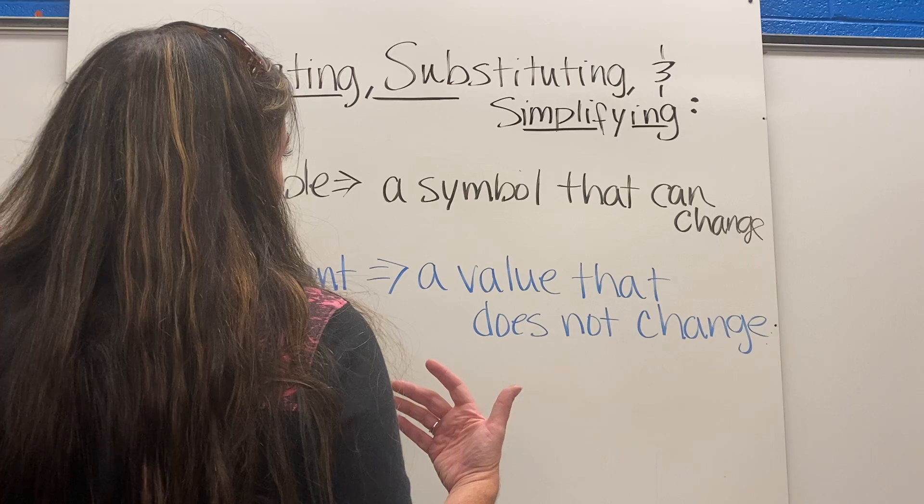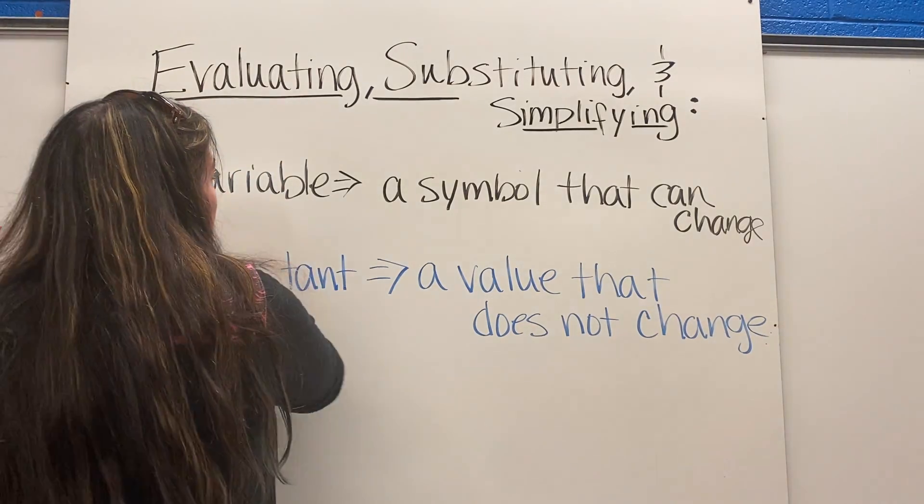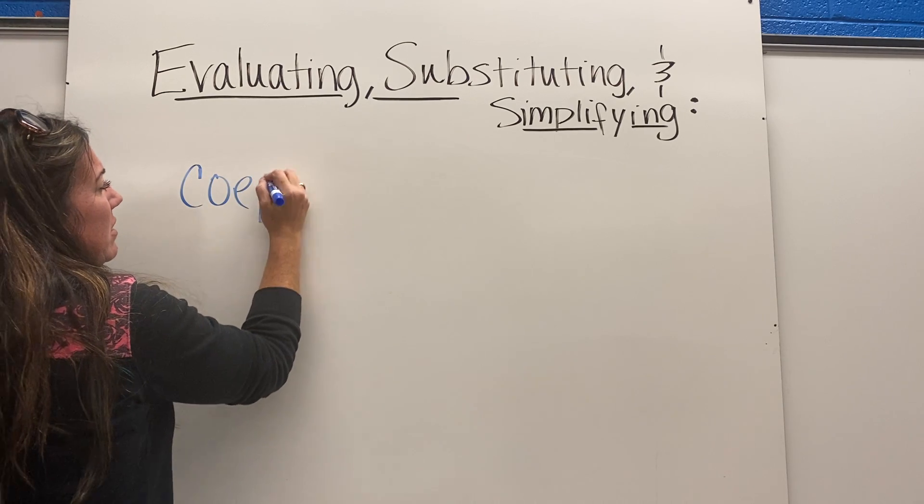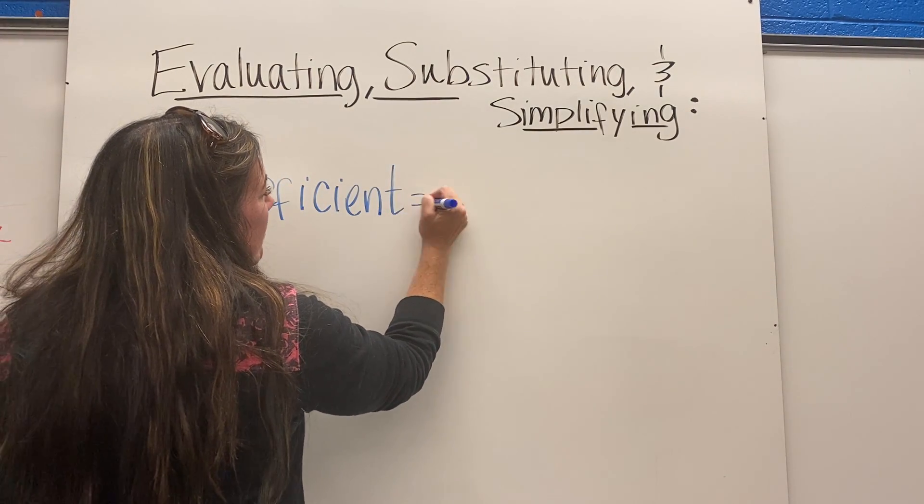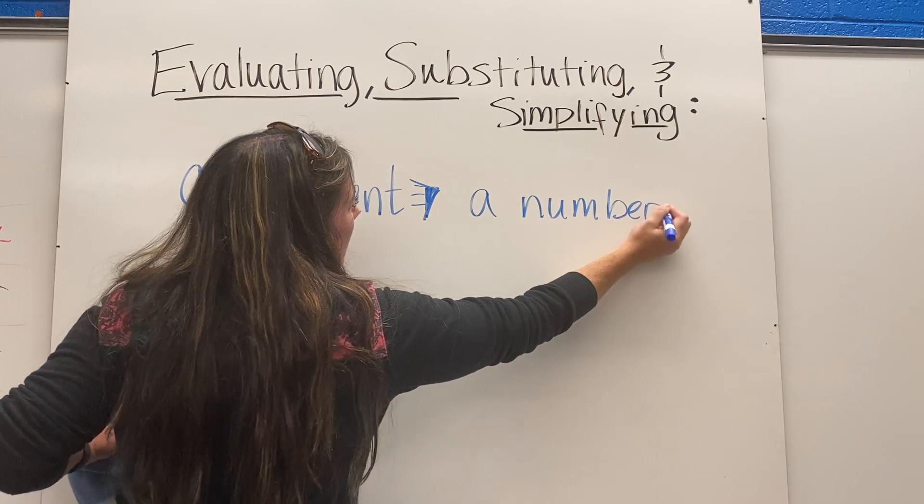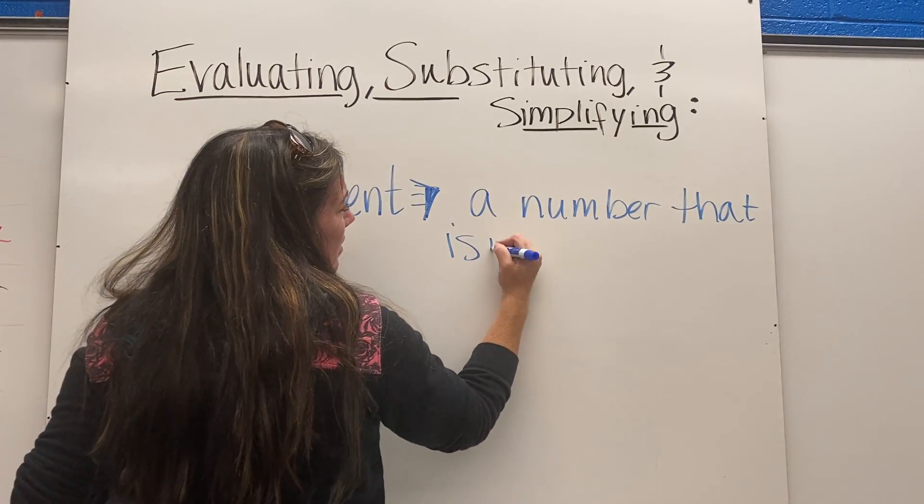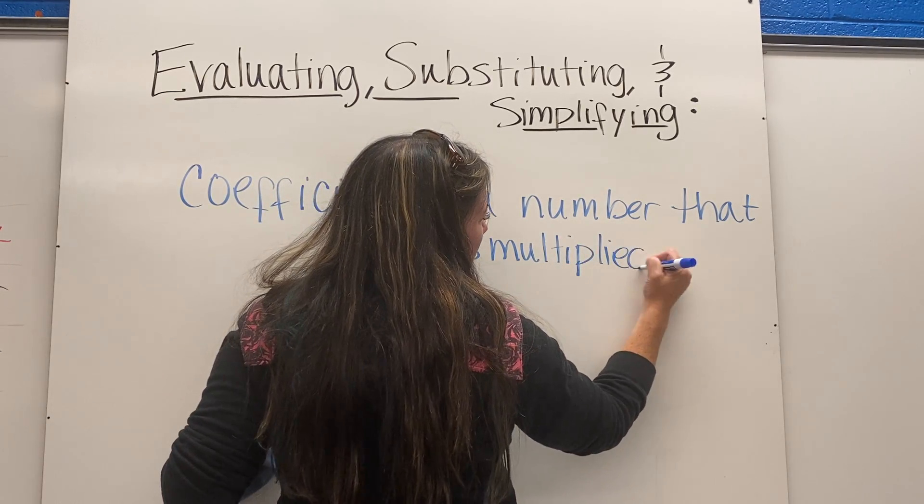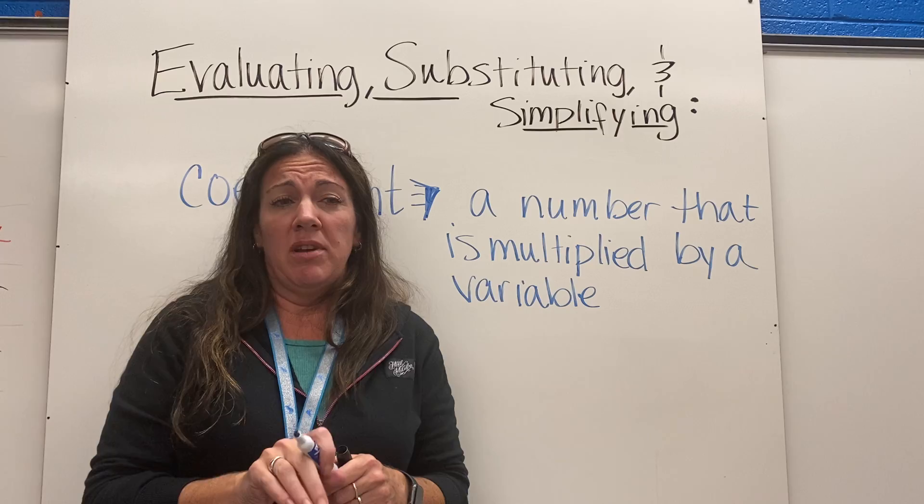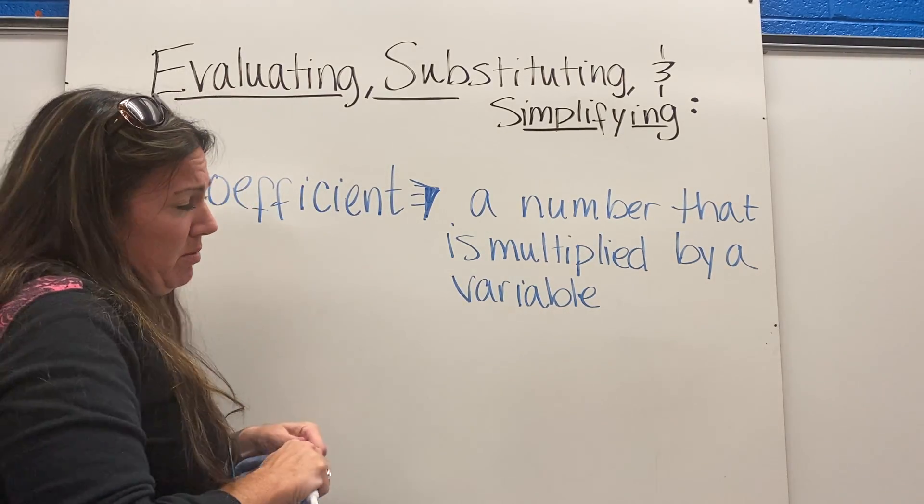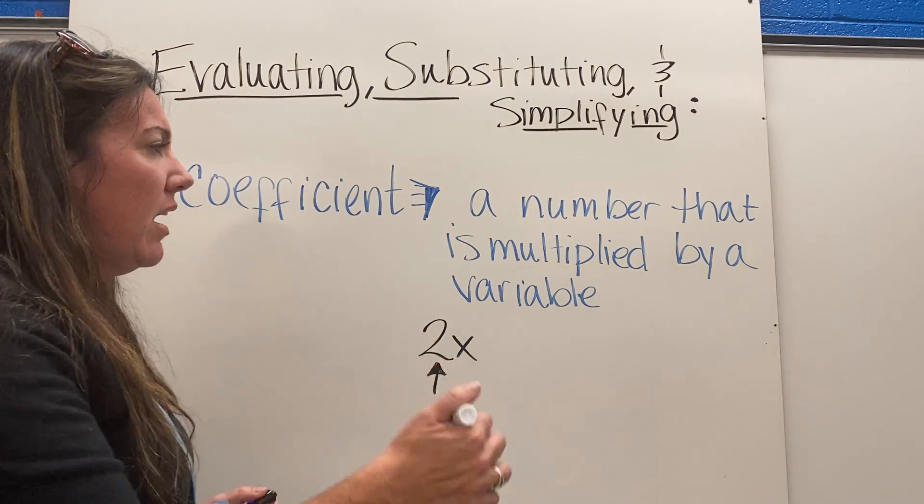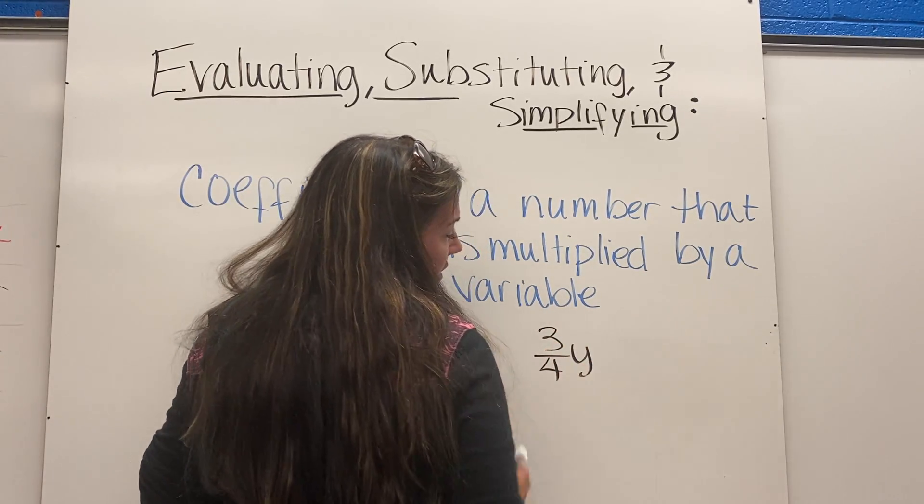Sometimes when we talk about variables, we talk about coefficients. A coefficient is a number that is being multiplied by the variable. Coefficients are smooshed up right next to variables, and when they are smooshed up right next to each other it means to multiply. So 2x, the 2 is the coefficient. If you have three-fourths y, well that's the number that's being multiplied.